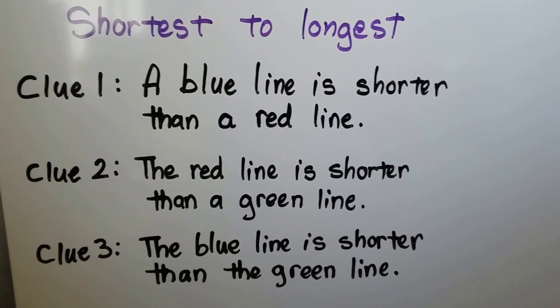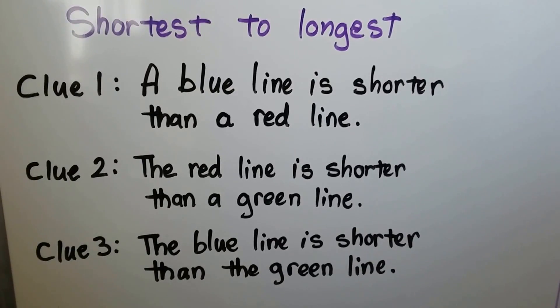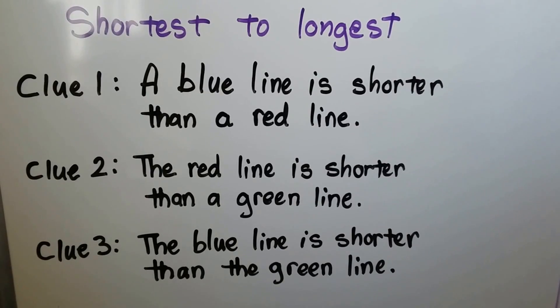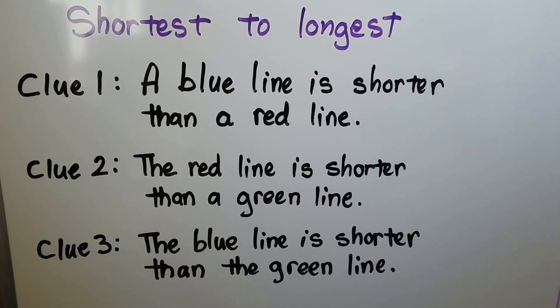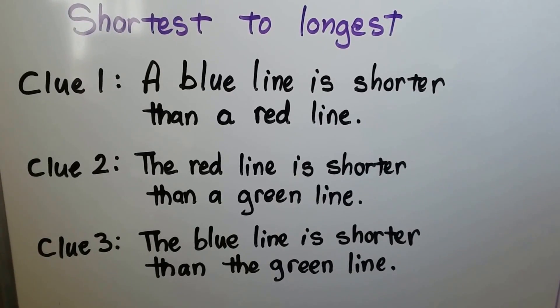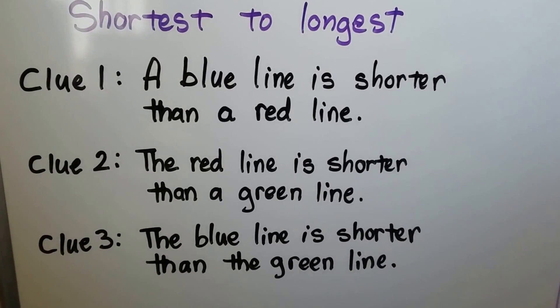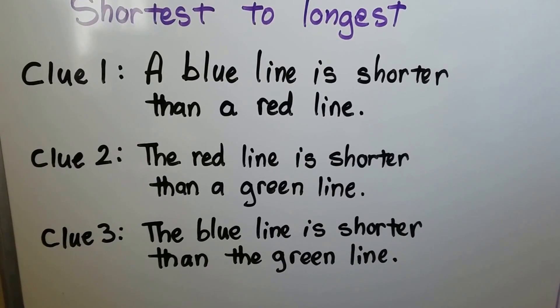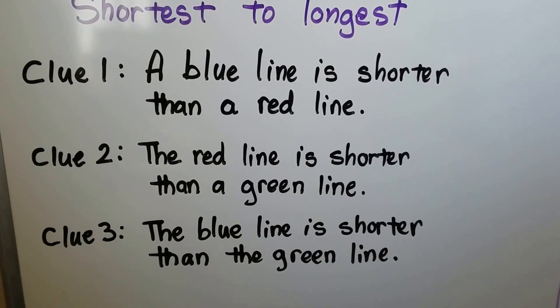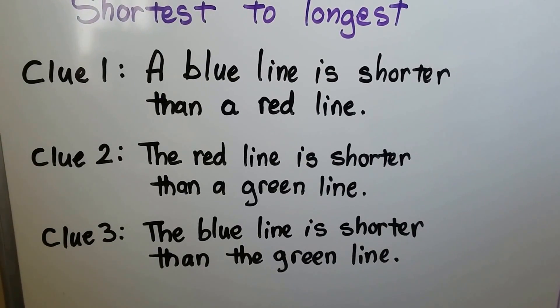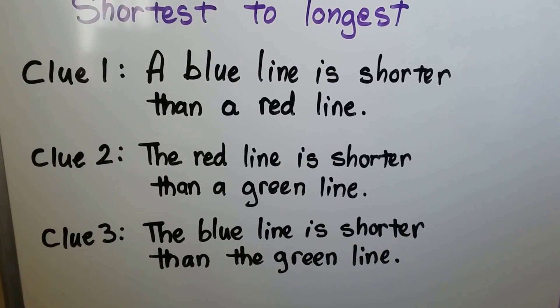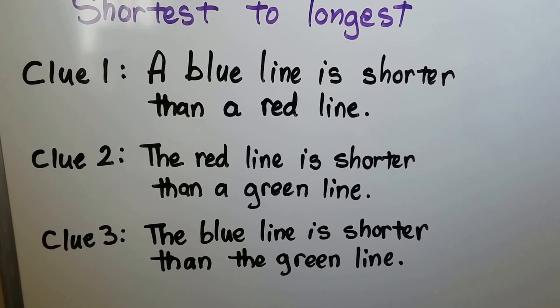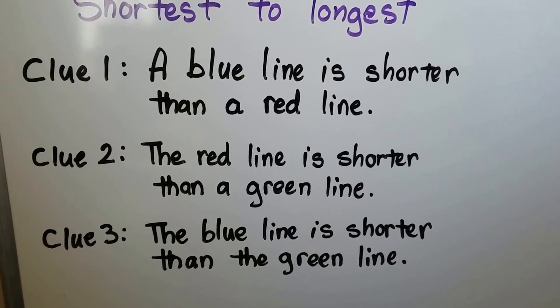Clue 1 says a blue line is shorter than a red line. Clue 2 tells us the red line is shorter than a green line. And clue 3 tells us the blue line is shorter than the green line.